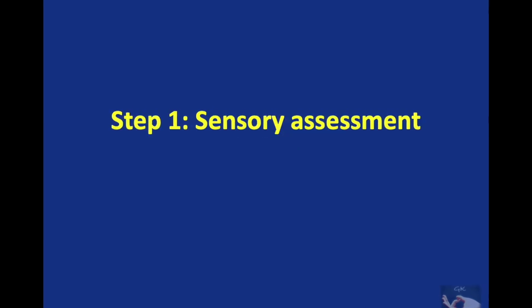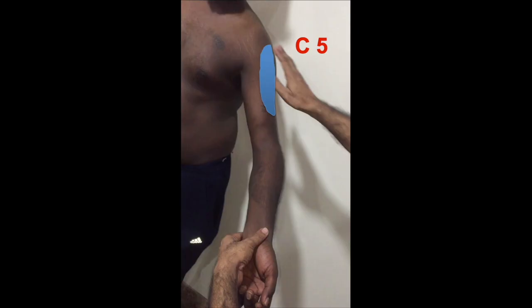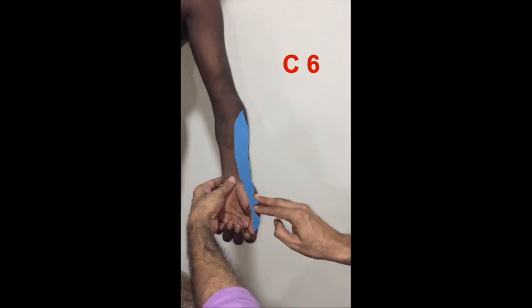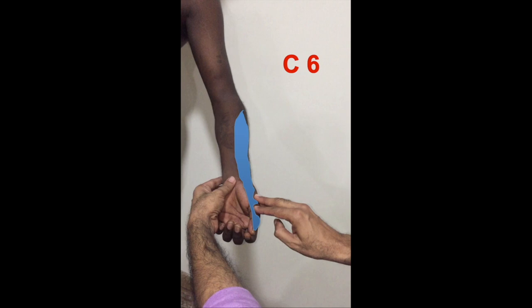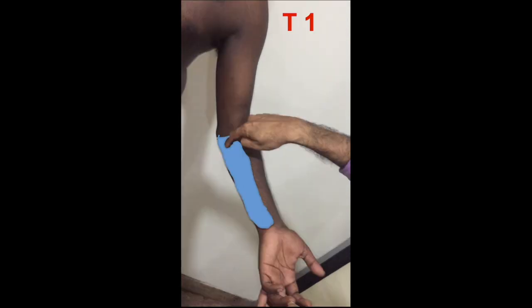The examination consists of 13 steps, starting with sensory examination. The lateral aspect of the arm is the C5 area. The middle lateral aspect of the forearm extending up to the tip of the thumb is the C6 territory. The C7 territory extends to the middle finger. The ring and little fingers up to the palm in the ulnar border represent the C8 territory, and the medial aspect of the forearm is the T1 territory.